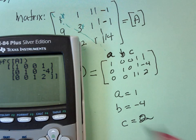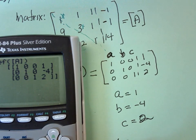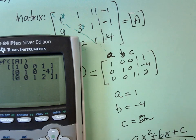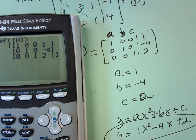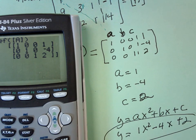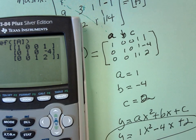And our answer is Y equals AX squared plus BX plus C, or Y equals 1X squared minus 4X plus 2. That is a parabola, or a quadratic that goes through those three coordinate points. We just did a quadratic regression.